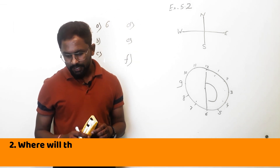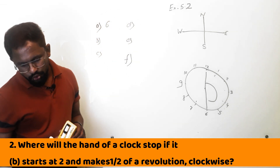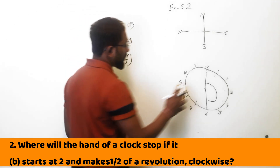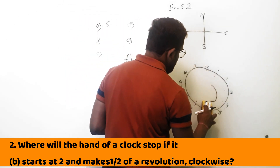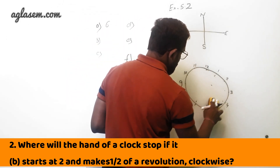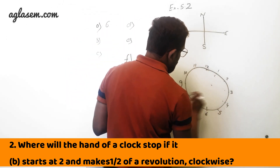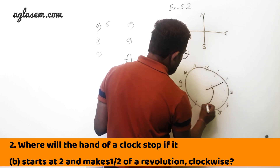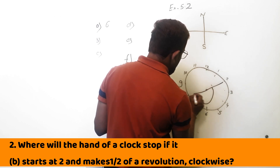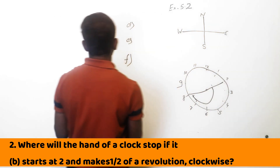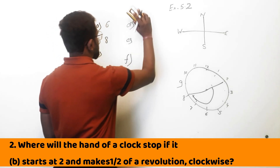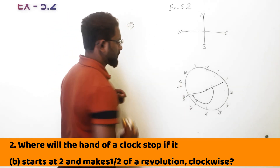B part: starts at 2 and makes half of the revolution clockwise. It is starting from 2 and making half of the revolution, so it will be at 8.